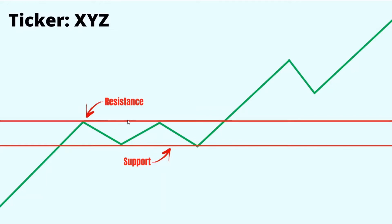Now you're probably wondering: what about right here where it didn't go down — it broke through? Well, when a stock breaks through a resistance line, or breaks through a support line, the two switch. So once it broke through that old resistance, it becomes a new support line. The same is true if the stock went down and broke through the support line — that old support would become a new resistance line.